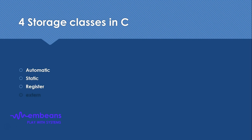The next storage class is register. Register is very specific because the variable is intended to be stored in the microprocessor or microcontroller register. However, this is not always possible because the number of registers is limited, so the compiler will treat it as a normal auto variable in that case.